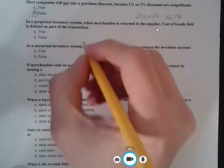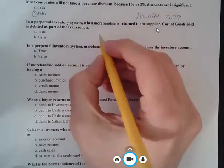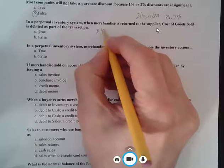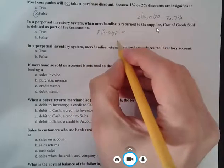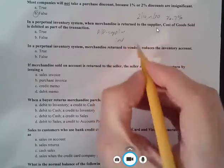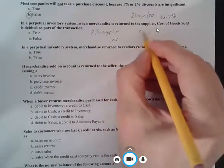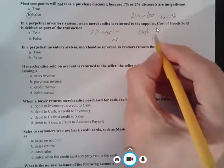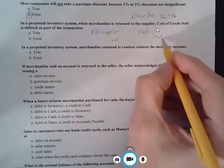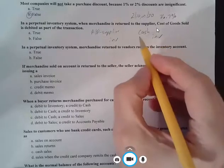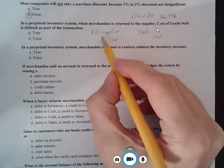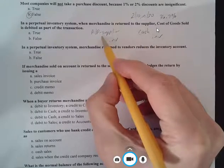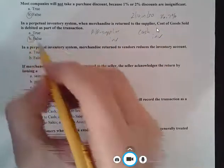What we're going to be debiting in this situation is either, our actual journal entry here would either be accounts payable to the supplier, and then a credit to inventory. Inventory is going down because we're returning it, and then our debit would be cash. Or if we owe money, we would be debiting the account payable for the value of the merchandise that we return to the supplier. So this is also a false statement.